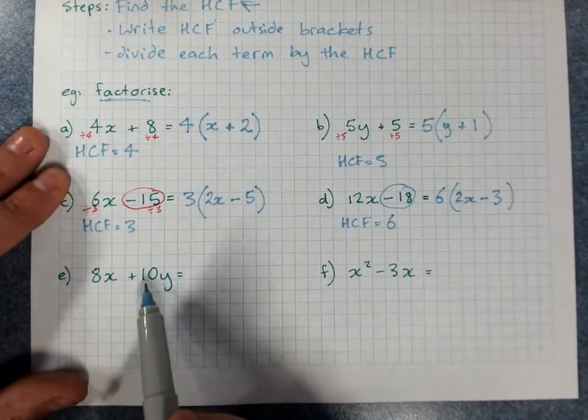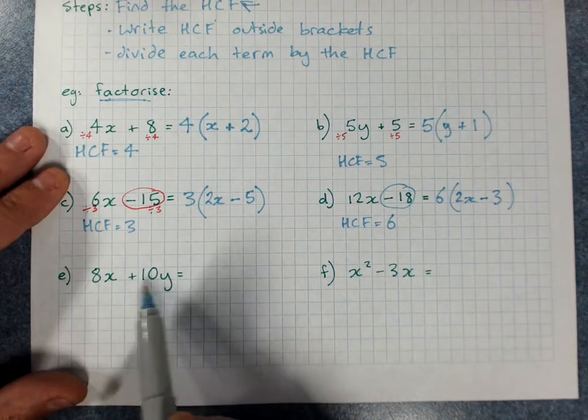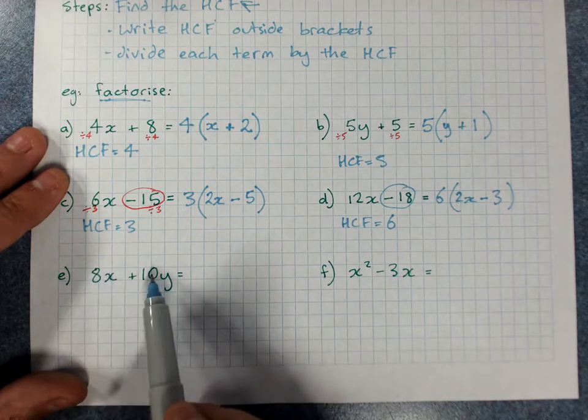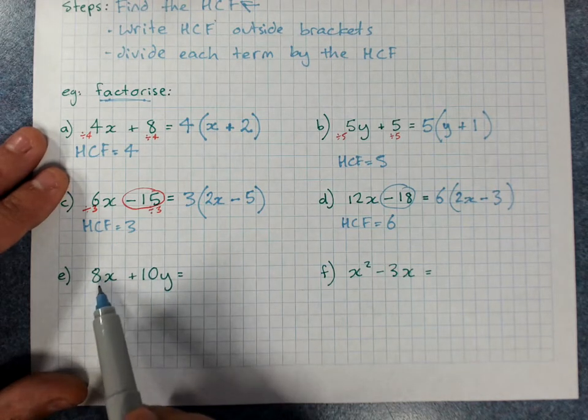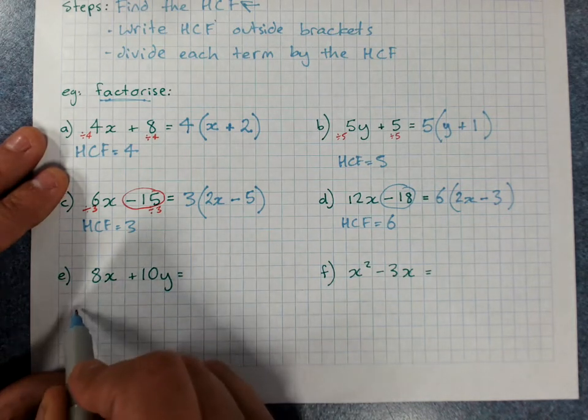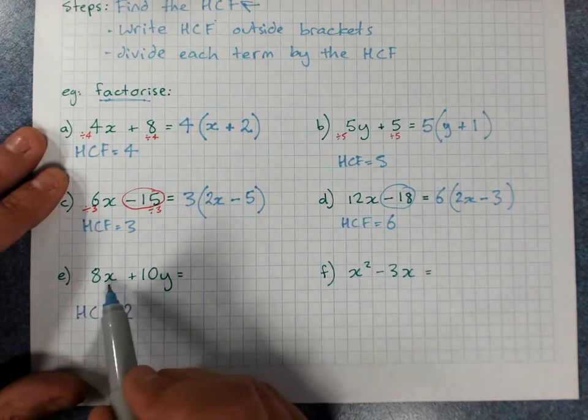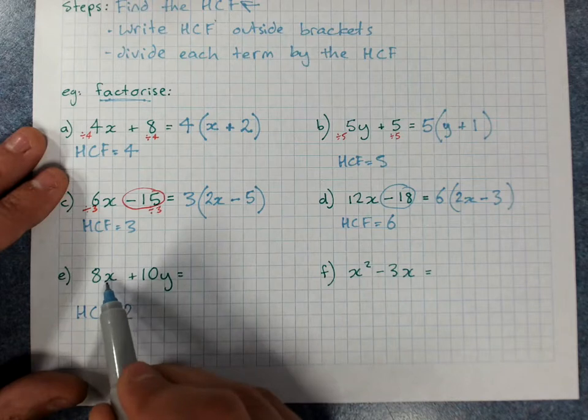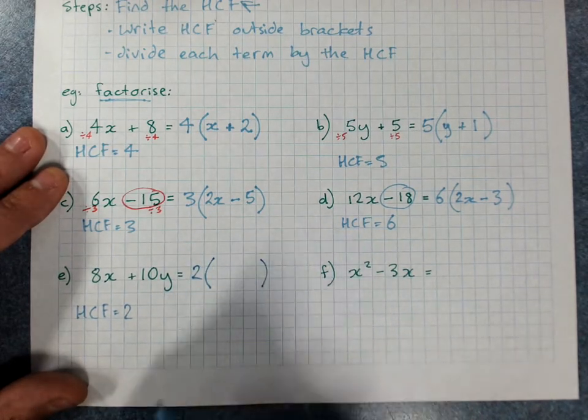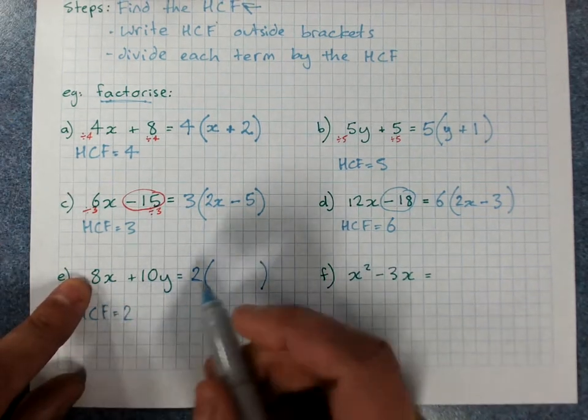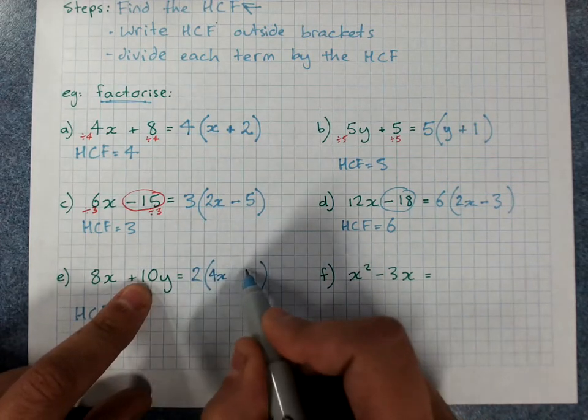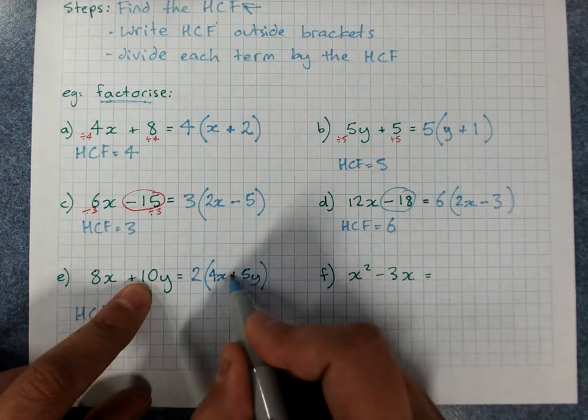8x plus 10y. Now there's letters in both of them now. Look at the small number first. Numbers then letters. Does 8 go into 10? Nope. Does 4 go into 10? Because that's the next one down. Nope. Does 2 go into 10? Yes. HCF equals 2. Look at the letters. Are there any letters in common? No. I've got x and y. HCF is 2. Put it outside the brackets. 8x divided by 2 is 4x. 10y divided by 2 is 5y. And that was positive. So I put a plus.